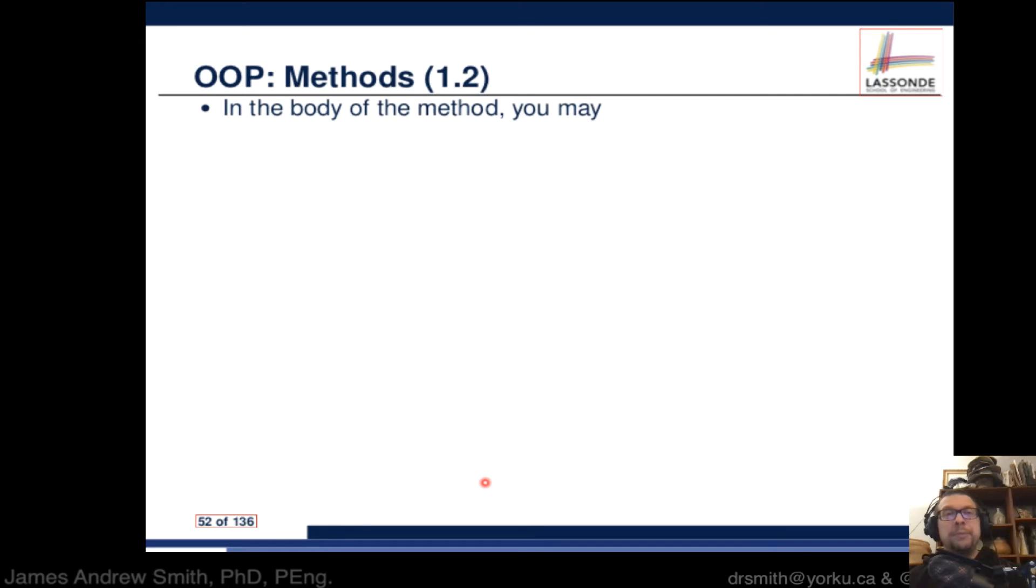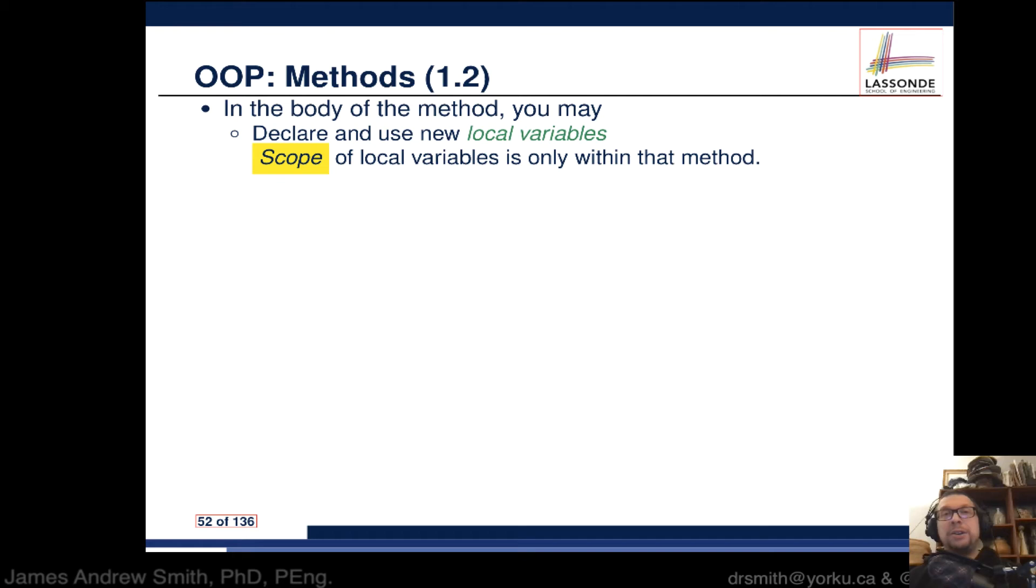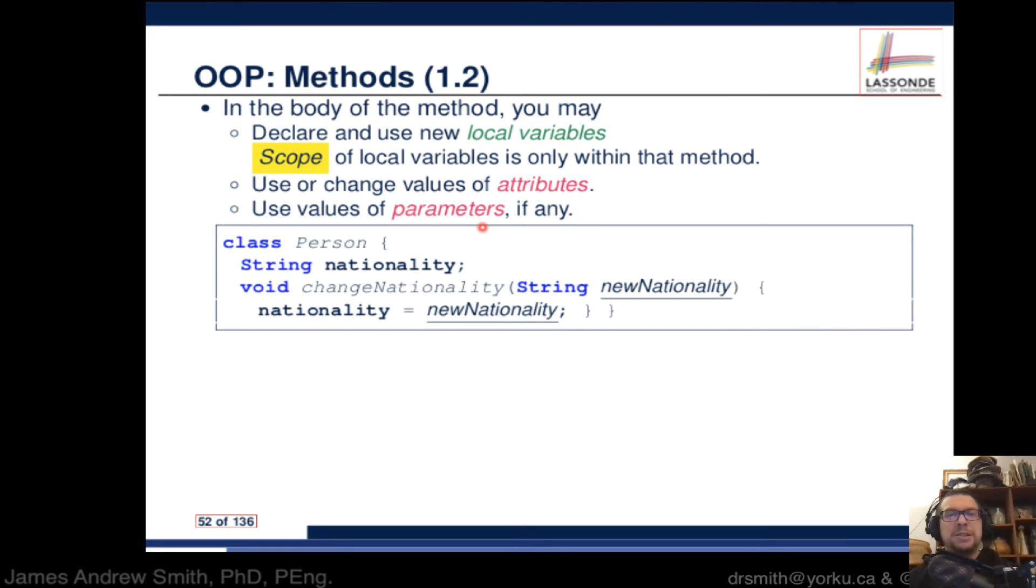In the body of the method, between the curly braces, you can declare and use local variables. They're local because their scope is only within that method. You can also use or change values of attributes (in the class where the method is found) and use values of parameters (the inputs inside the parentheses, sometimes called arguments).